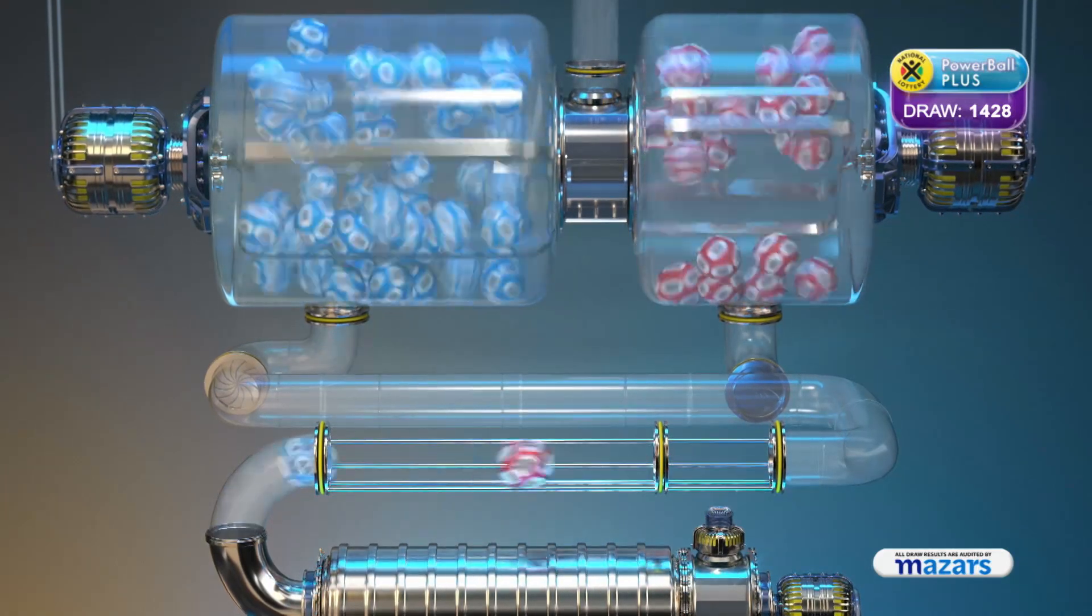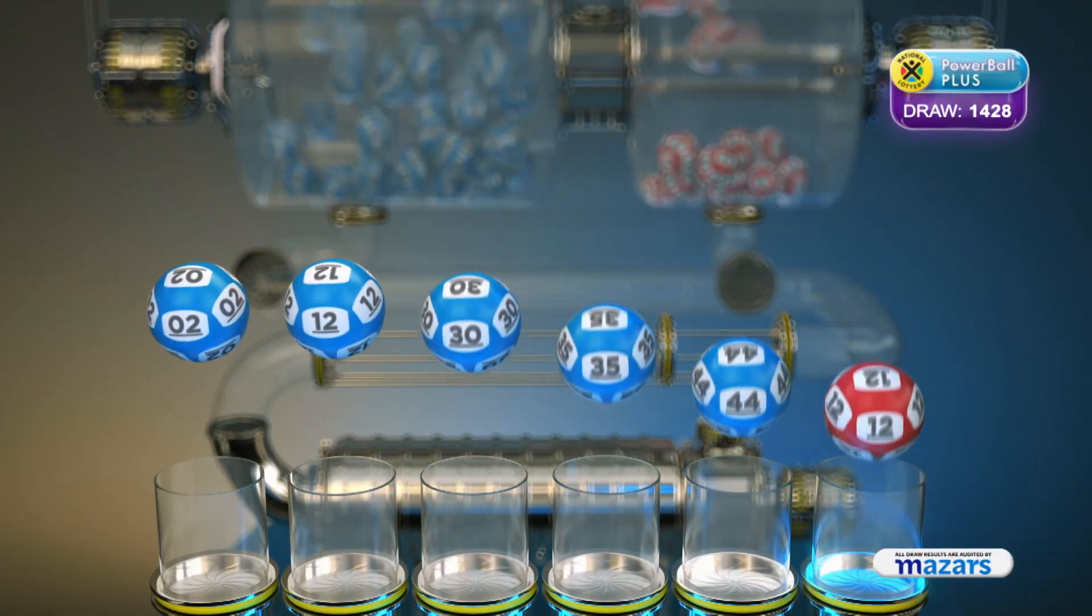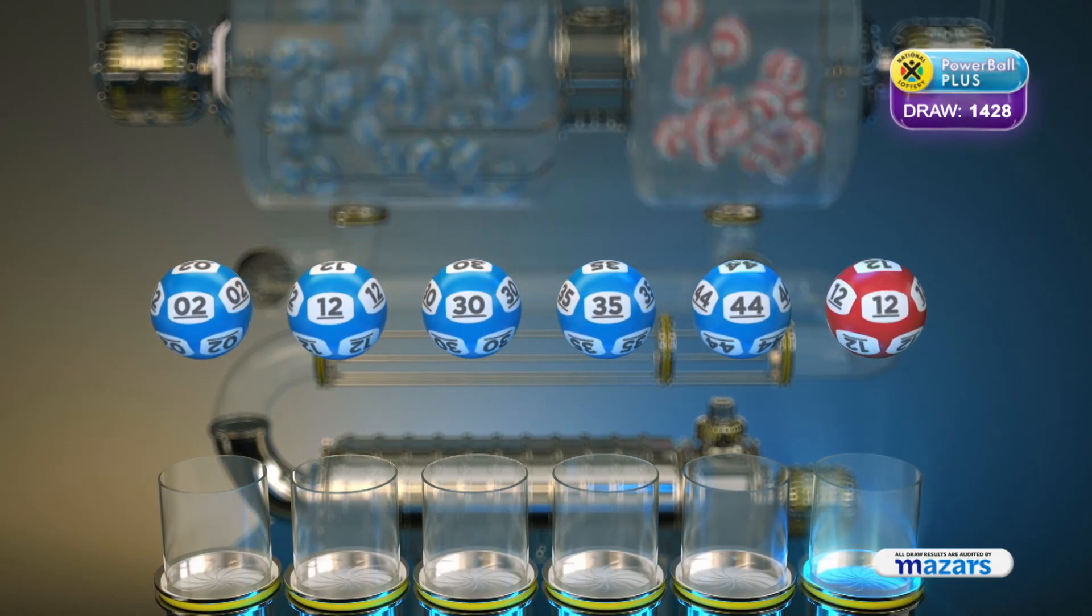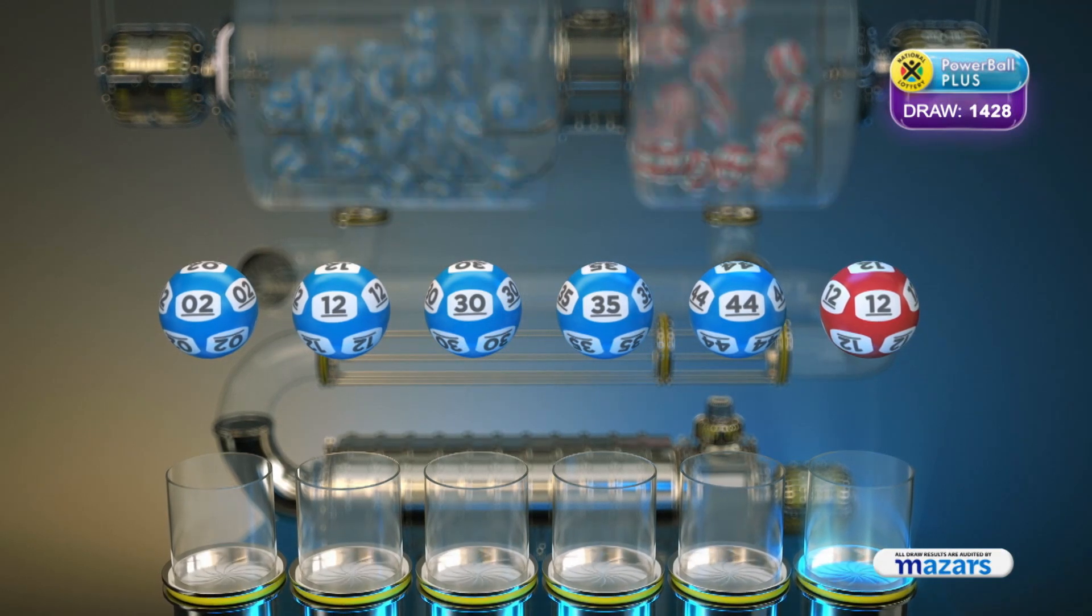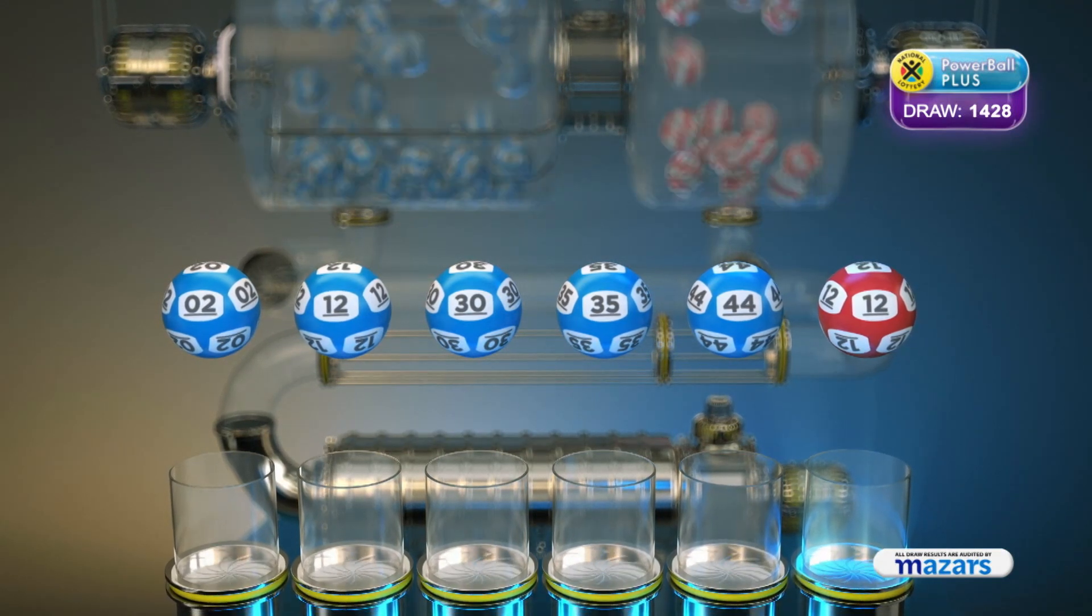Let's recap these numbers in numerical order: 2, 12, 30, 35, 44, and the powerball is 12.